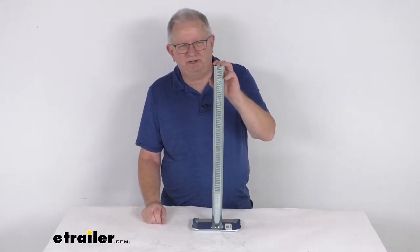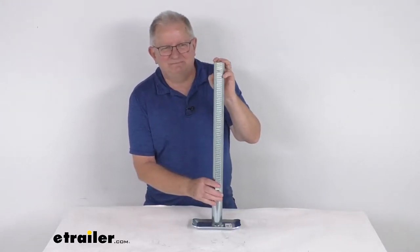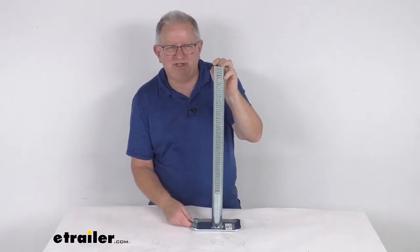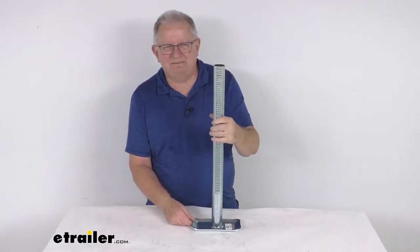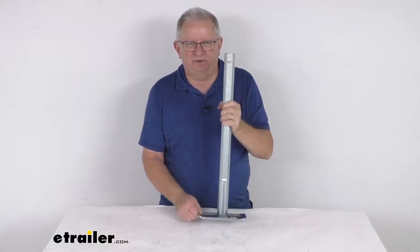Hello everybody, this is Jeff at eTrailer.com. Today we take a look at this Bulldog 23 and a half inch tall rack and post assembly with the footplate for your rack and gear jack.